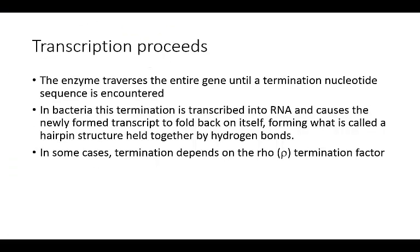After initiation, transcription will proceed. The RNA polymerase is going to traverse the entire gene until it reaches a termination nucleotide sequence. In bacteria, this termination sequence is transcribed into the RNA itself and causes the newly formed transcript to fold back on itself, forming a hairpin structure held together by hydrogen bonds. In some cases, termination actually depends on a Rho termination factor.